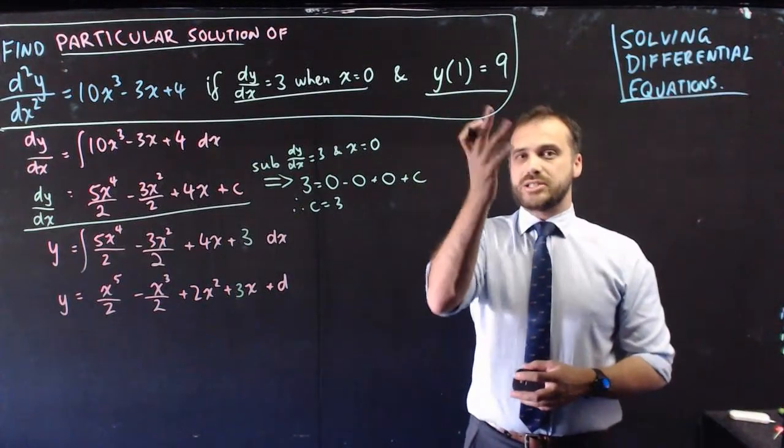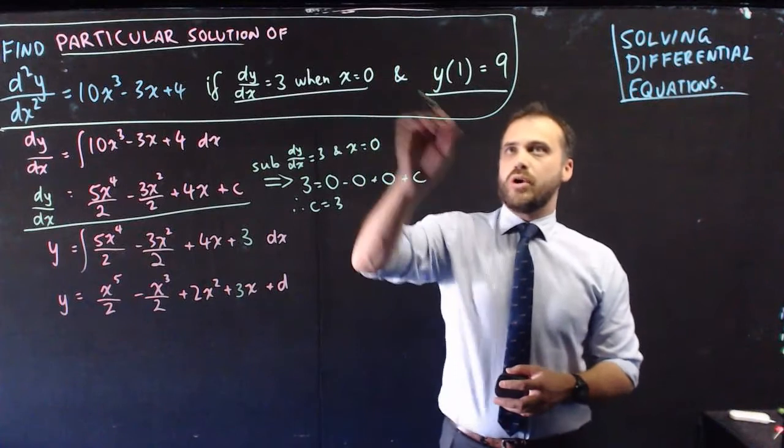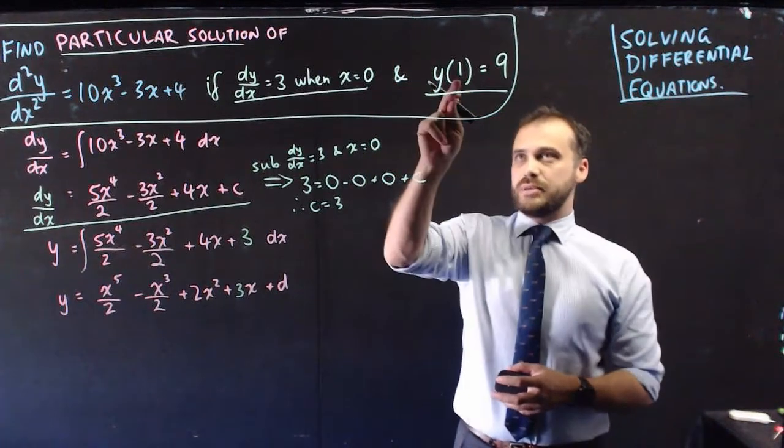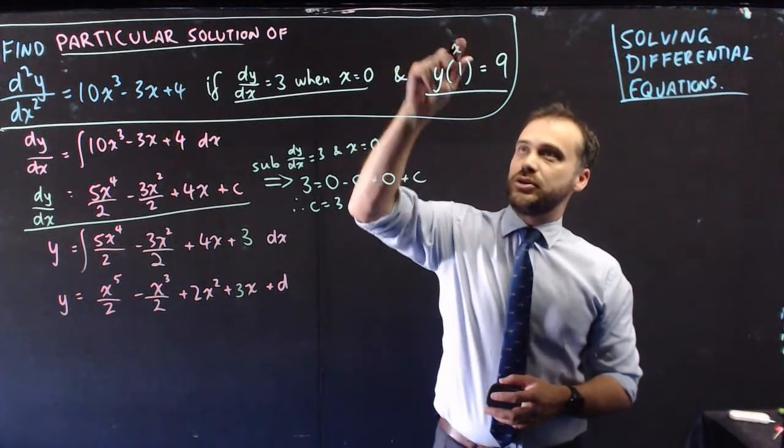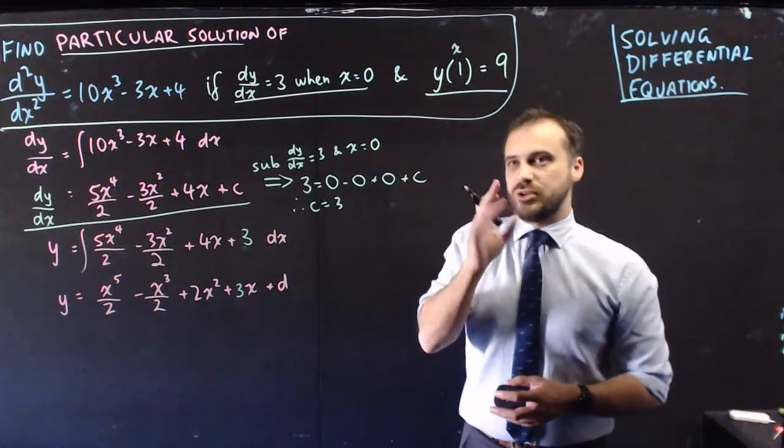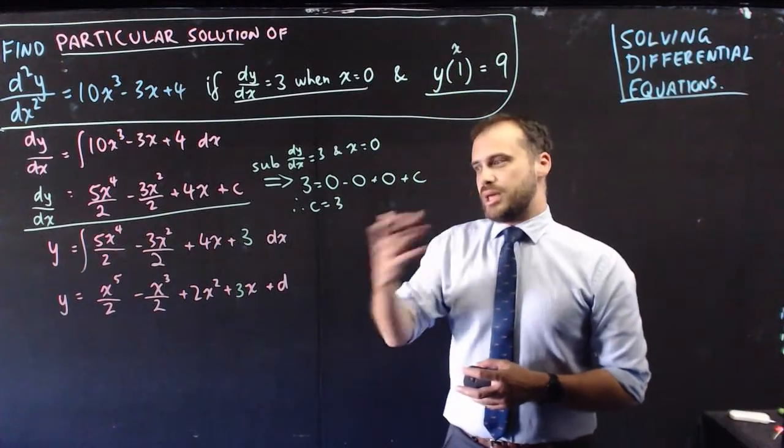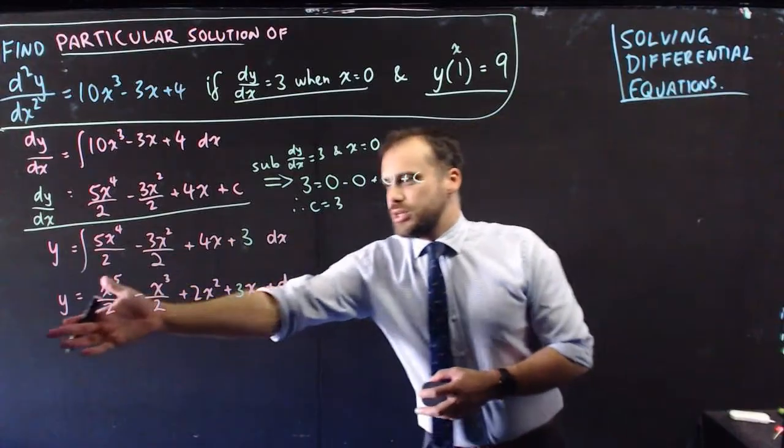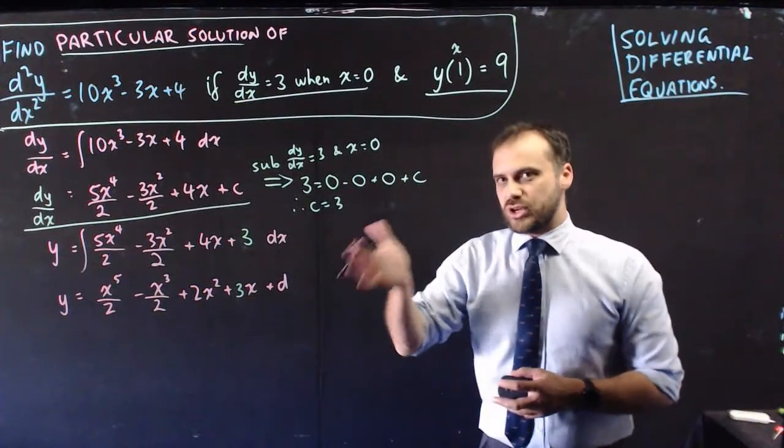So now we can employ our last piece of information here: y(1) equals 9. That means when we have an x value of 1, our y value is 9. So we simply sub x equals 1 and y equals 9 into this equation, and we'll be able to solve for d.